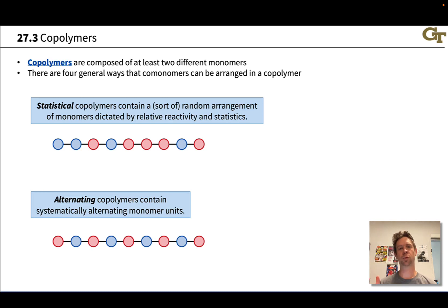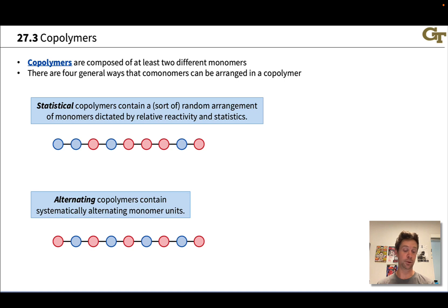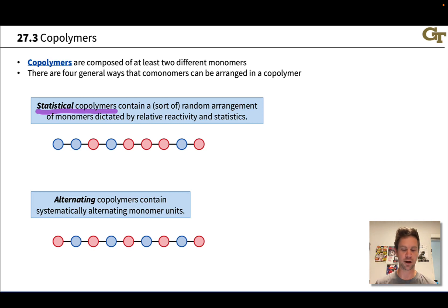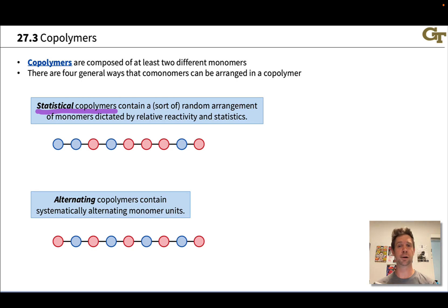There are four general ways that monomers can come together to form a copolymer. The first is basically an entirely random arrangement, what we might call a statistical copolymer. This is a sort of random arrangement of monomers, and it is dictated by relative reactivity, stoichiometry, and just pure statistics — the likelihood of molecules bumping into each other.